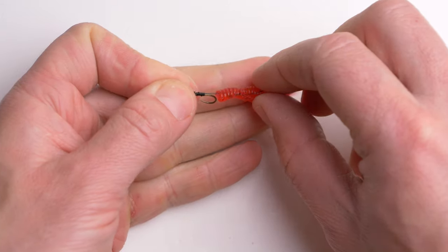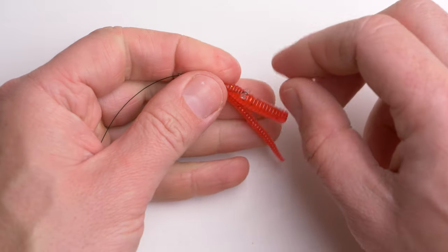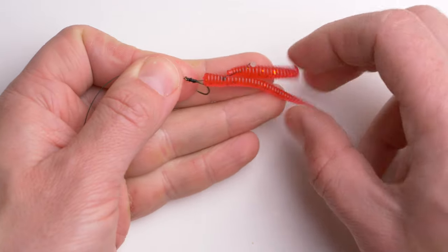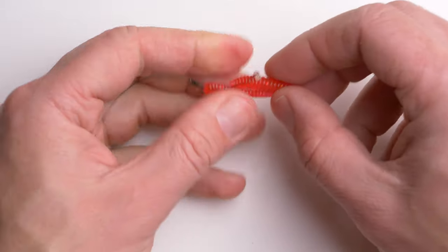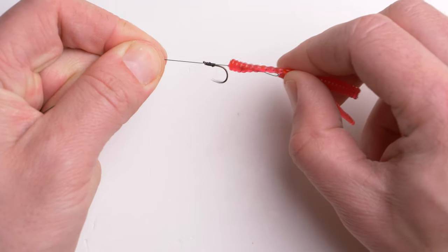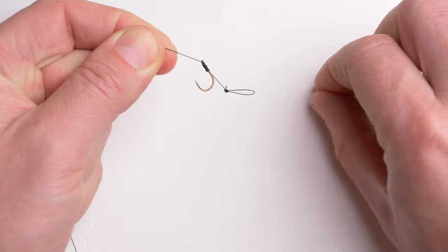Also, this rig has the advantage that you can change the hook bait pretty quickly or remove the damaged hook bait very quickly. Just remove the bait stop and pull the baits off the hair.